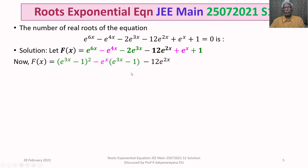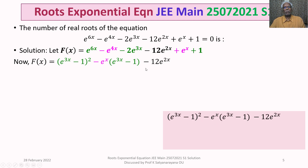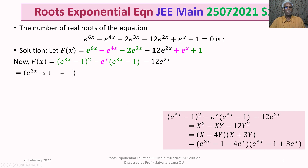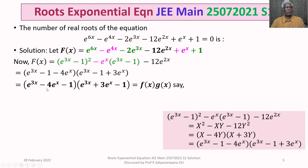To factorize further, let X = e^(3x) - 1 and Y = e^x. Then the expression becomes X^2 - XY - 12Y^2, which factors easily as (X - 4Y)(X + 3Y). Substituting back, the two factors are: f(x) = e^(3x) - 4e^x - 1, and g(x) = e^(3x) + 3e^x - 1. So F(x) = f(x)·g(x).